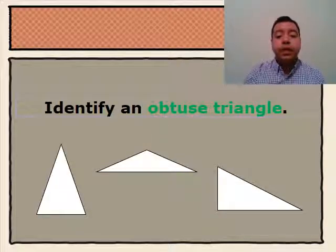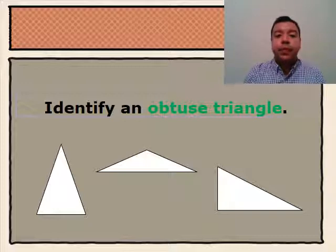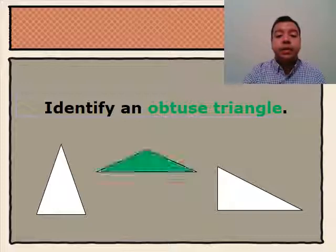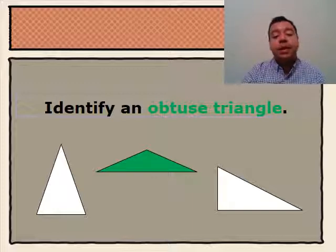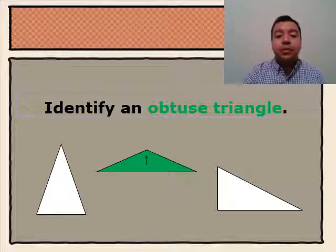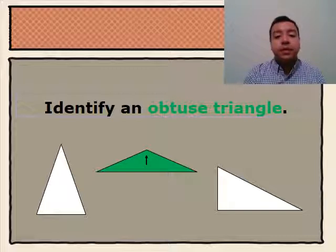And lastly, we'll be identifying an obtuse triangle. We know that the obtuse triangle is the middle triangle because on the obtuse triangle there is an obtuse angle. As long as one of the angles is an obtuse angle, the triangle will be an obtuse triangle.